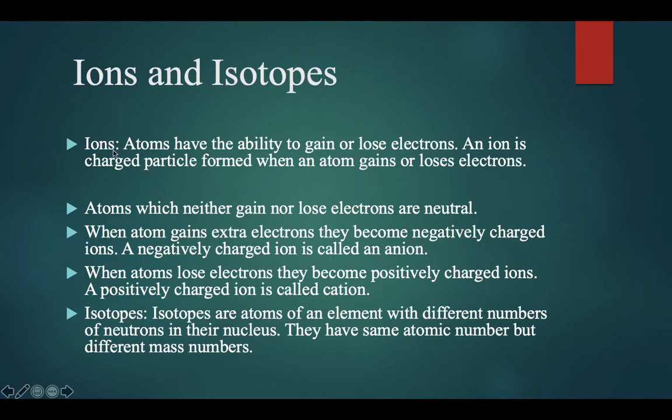Ions and isotopes: Ions - atoms have the ability to gain or lose electrons. An ion is a charged particle formed when an atom gains or loses electrons.